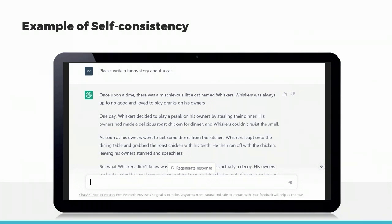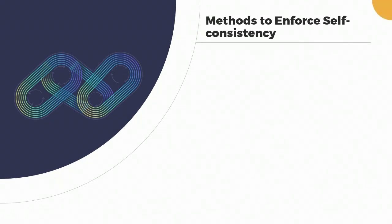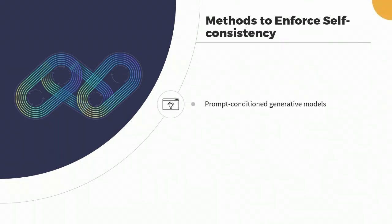One way to enforce self-consistency is by using prompt-conditioned generative models. These models are trained with specific prompts, and the generated text is conditioned on the input prompt, which means that the generated text will match the context, tone, and style of the input prompt, making it self-consistent.